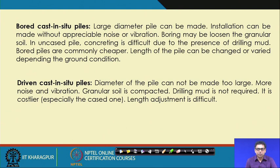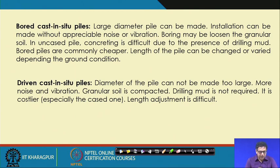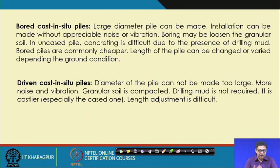For bored cast-in-situ piles: large diameter piles can be made, installation can be done without significant noise and vibration, but boring may loosen the granular soil. For uncased piles, concreting is difficult due to the presence of drilling mud. Bored piles are commonly cheaper and the length can be varied depending on ground conditions.